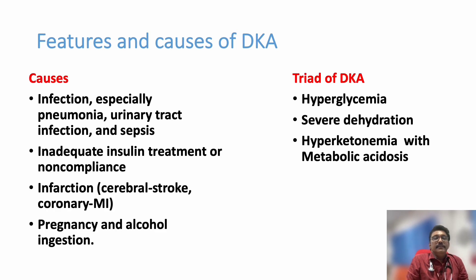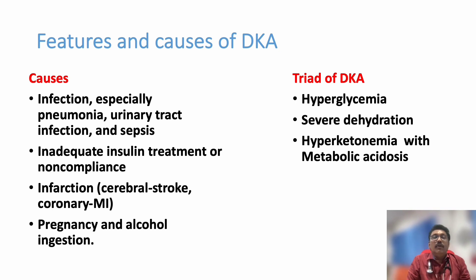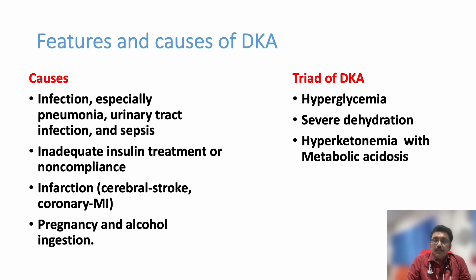Causes include infections like pneumonia, UTI, sepsis, stoppage of insulin, stroke, myocardial infarction, pulmonary embolism, pregnancy, and alcohol ingestion — all can be causes of DKA. The triad of DKA is: very high blood sugar, severe dehydration due to osmotic diuresis, and hyperketonemia with metabolic acidosis.